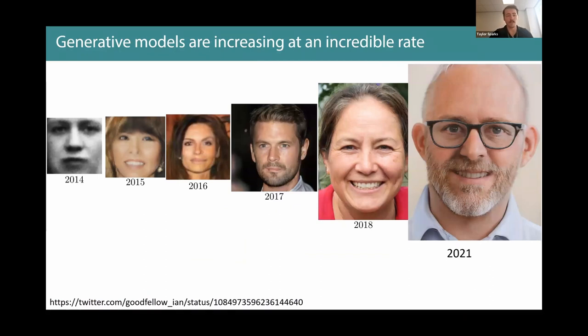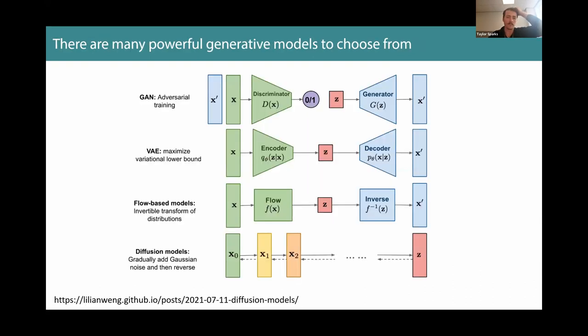So this came from a tweet from Ian Goodfellow. Maybe some of you have seen this before. This was the guy who, as a graduate student, invented the generative adversarial network, and he was just tweeting this. I actually had to add the 2021, and I should probably add another one because it just continues to get better. He was pointing out just the incredible progress and the rate of progress has been remarkable. From the very first time that we were able to generate something that looks sort of like a human face to where we are now, it has not been a very long period of time, and yet we can do some remarkable things.